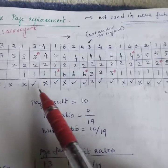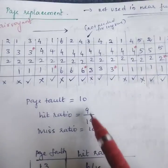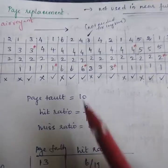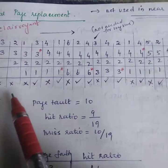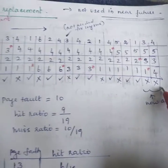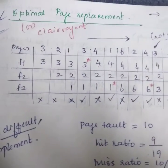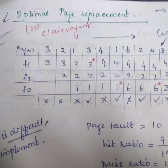After finishing this we get page fault 10, hit is 9, so 9 by 19, and miss is 10. Page fault is miss, so 10 by 19. Total is 19 reference strings. So that's all about this algorithm. Hope you have understood this concept, thank you.